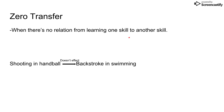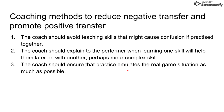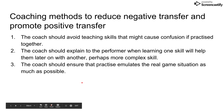Finally, there is zero transfer, where there's no relation at all between learning one skill and another. For example, shooting in handball definitely does not affect your backstroke in swimming, because these are two completely unrelated techniques and skills, so there's no way they can be affecting each other.